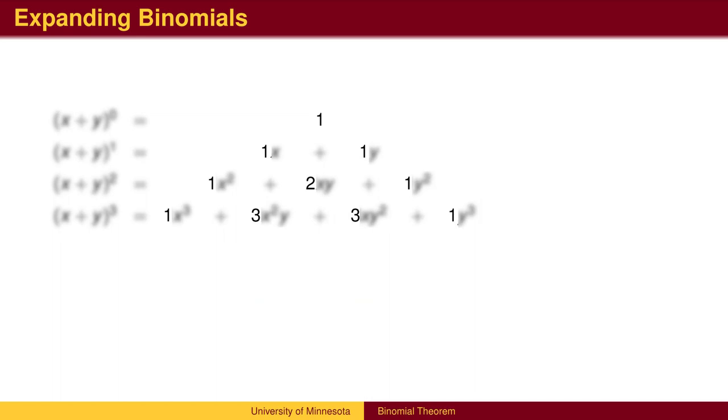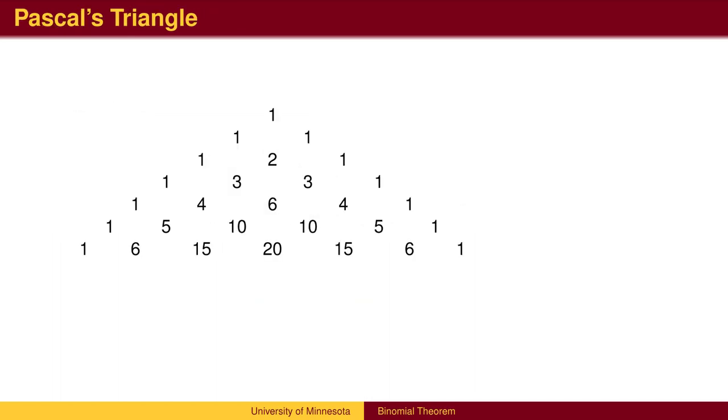When we look just at the coefficients from left to right, we get the familiar pattern from Pascal's triangle. Each row begins and ends with 1. The numbers in between are found by adding the two numbers above. For example, 4 plus 6 gives 10.